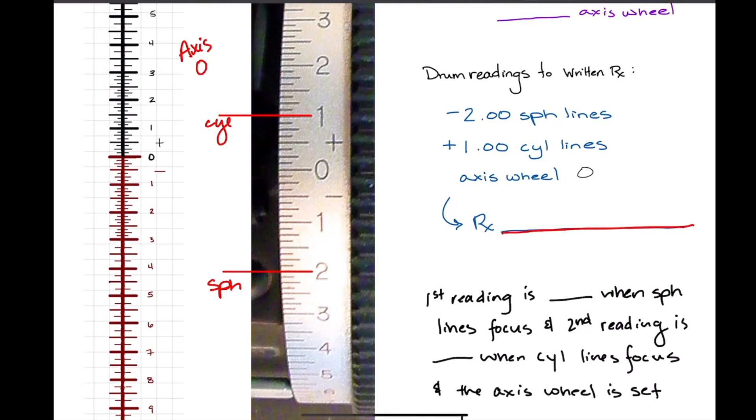So how would we write this prescription out? Well, the sphere lines and that axis are associated, right? So minus 2 and the axis is at zero. So we're going to write 180 because you can't write zero in a prescription.